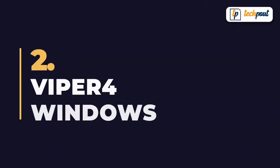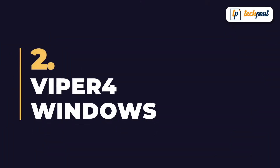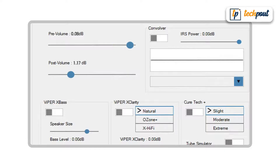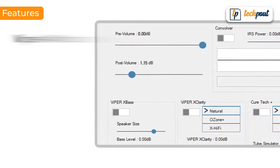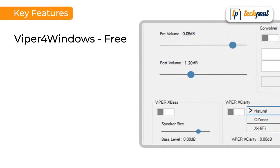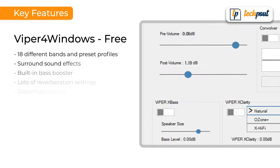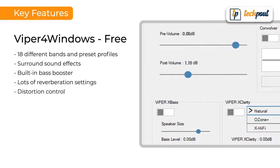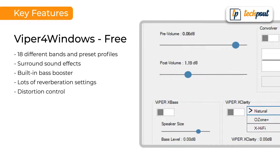On the second position, we have Wiper 4 Windows. This application is available for free to download and use. The top features of Wiper 4 Windows Equalizer include 18 different bands and preset profiles, surround sound effects, built-in bass booster, lots of reverberation settings, and distortion control.